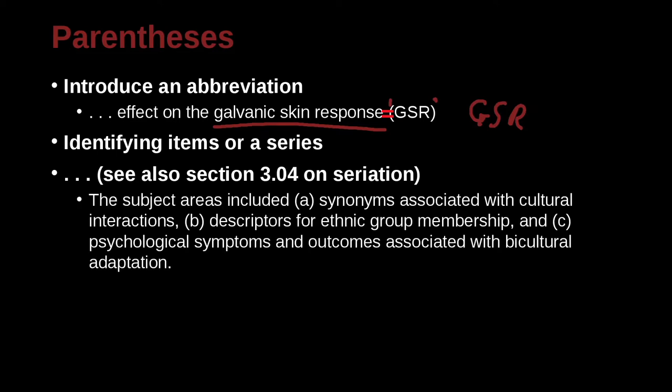So in a series, for example, the subject areas included A, comma B, comma C. So this is a series. And how do we separate the series? Well, of course, we use the comma as we've already studied. And for the last one, we use the conjunction and with a comma. But we also use the parentheses to enclose this 1, 2, 3 idea.